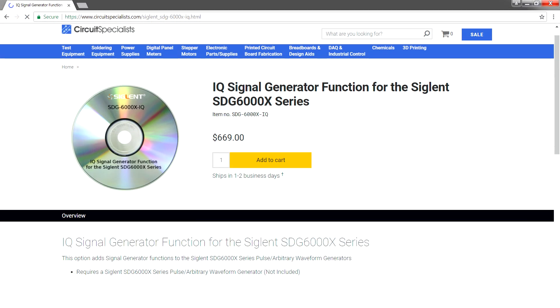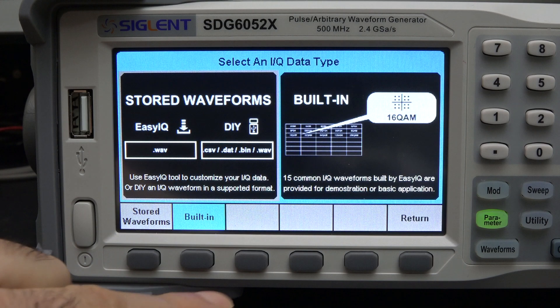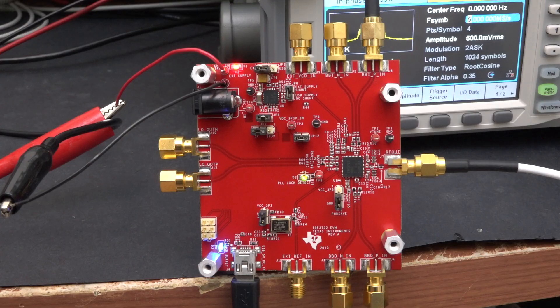Next, let's take a look at what makes this product really interesting for RF work. For an extra $669, you can get the option to generate IQ signals. It's pretty easy to do this right off the unit itself, and there's a ton of options ranging from 2ASK to 256QAM. I've got a demo setup here with an IQ modulator evaluation board from TI. I'm going to use it to generate a 1700MHz carrier, and then we're going to modulate it with the IQ outputs from the wave generator. The idea is that you can use the unit to generate test signals for RF equipment that you're designing.